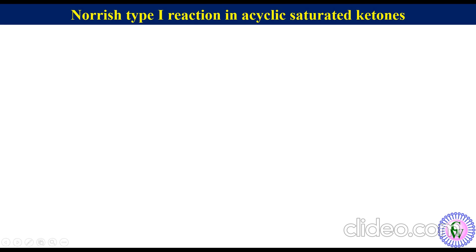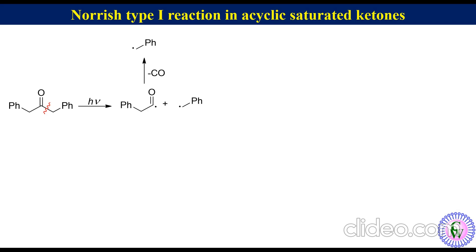In the case of dibenzyl ketone, after irradiation it produces an acyl radical and a benzyl radical. The acyl radical immediately loses carbon monoxide to produce a second benzyl radical. The benzyl radical doesn't have any chance for disproportionation, so they just combine together to produce 1,2-diphenylethane as the only product.